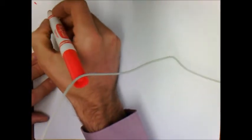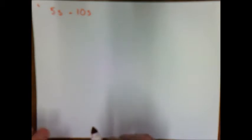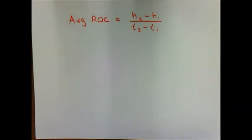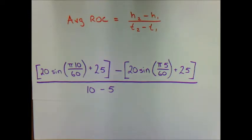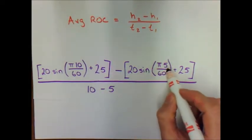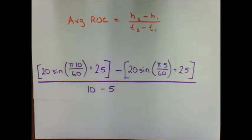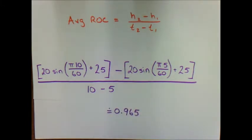Let's take our first interval: five seconds to ten seconds. We want to find the average rate of change using our formula, which is h2 minus h1 over t2 minus t1. I'll insert the height function values for t equals 10 and t equals 5 into the numerator, and 10 minus 5 in the denominator, and punch that into the calculator. The average rate of change over this interval is approximately 0.965.